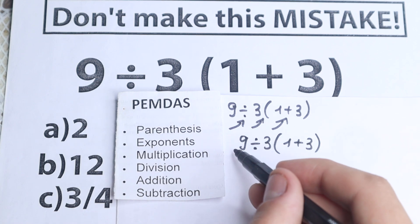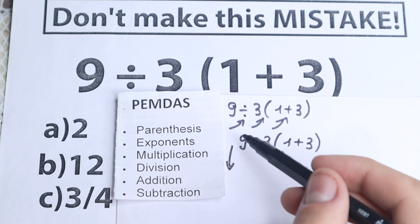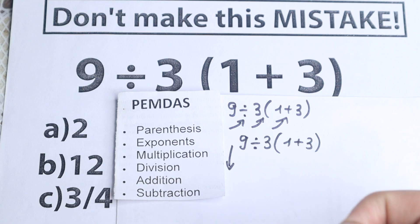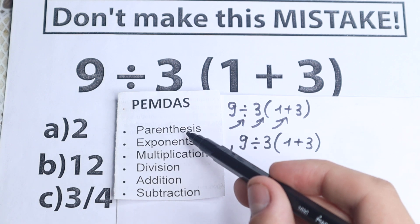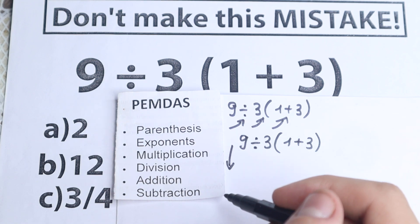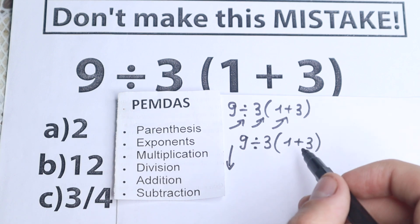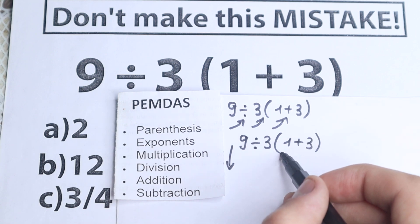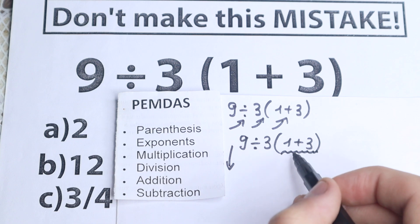First of all, we need to work according to PEMDAS. PEMDAS works from top to bottom and the first step is parentheses. As you can see, we need to start with these parentheses. 1 plus 3 in our parentheses gives us 4.